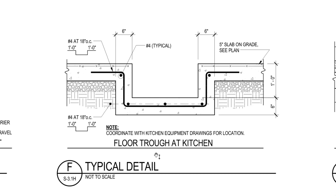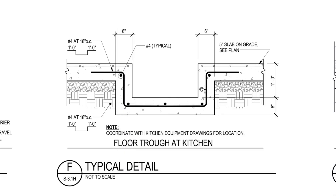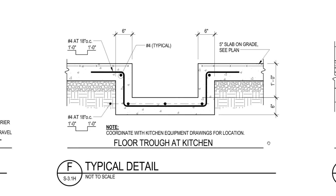This typical detail is the floor trough at kitchen. In commercial kitchens you'll have a floor trough for cleaning crews to put waste into. The detail mainly shows the rebar layout — number four rebar spaced every 18 inches on center — and provides the relevant dimensions. Nothing particularly difficult to understand here.